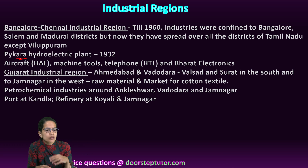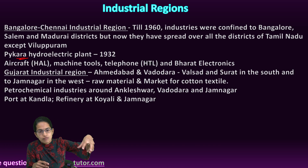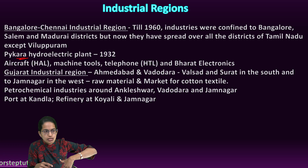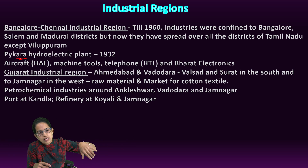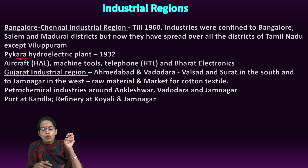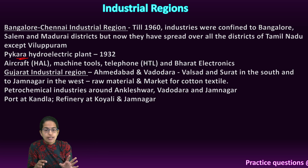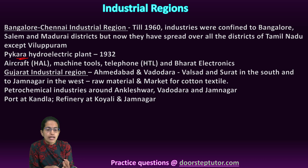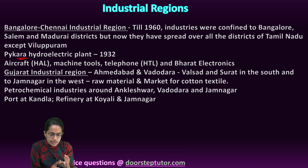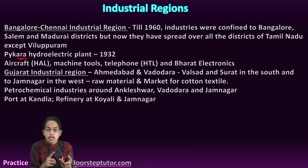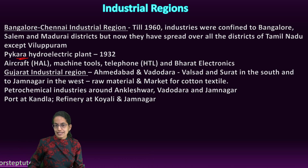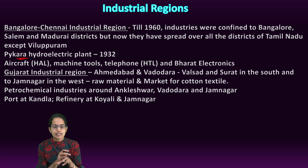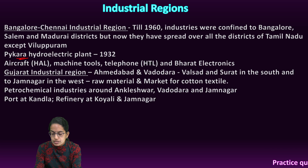The Gujarat industrial area spans from Ahmedabad and Vadodara in the north, Valsad and Surat in the south, and Jamnagar in the west. The whole region was a center for raw material as well as a market for cotton textile. Petroleum refining started at Jamnagar and Koyali, and petrochemical industries were established at Ankleshwar, Vadodara, and Jamnagar. Besides these, cotton textile, dairy products, food processing, pharmaceuticals, and dyes were some other industries.